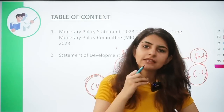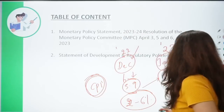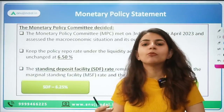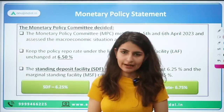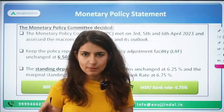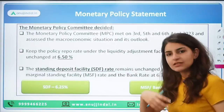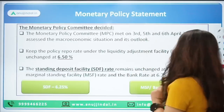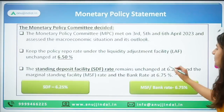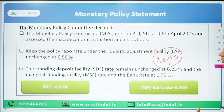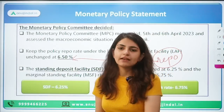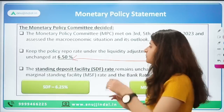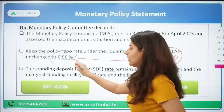It was expected that in the April Monetary Policy Committee statement, the rate would also be increased due to high inflation still above 6%. The expectation was that policy rates — the repo rate — would increase. However, the decision taken by this monetary policy committee is that the repo rate will remain unchanged at 6.5%. In the previous monetary policy statement, it was increased by 25 basis points, but this time it has remained unchanged at 6.5%.